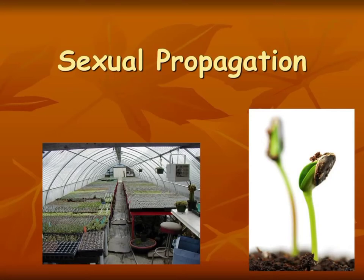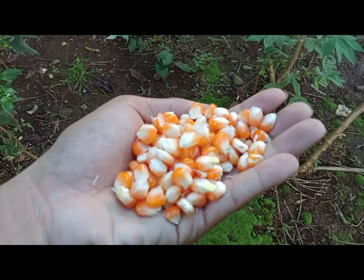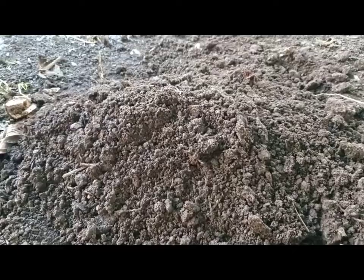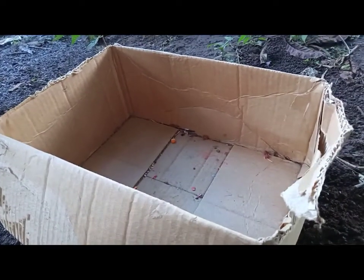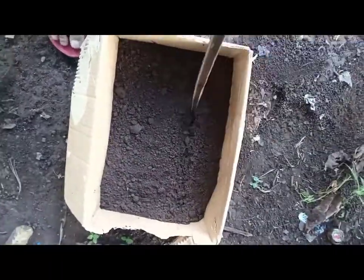Sexual propagation is the reproduction of plants by seeds. The genetic material of two parents is combined by pollination and fertilization to create an offspring. One of the several advantages of sexual propagation is that it may be quicker and more economical than asexual propagation.